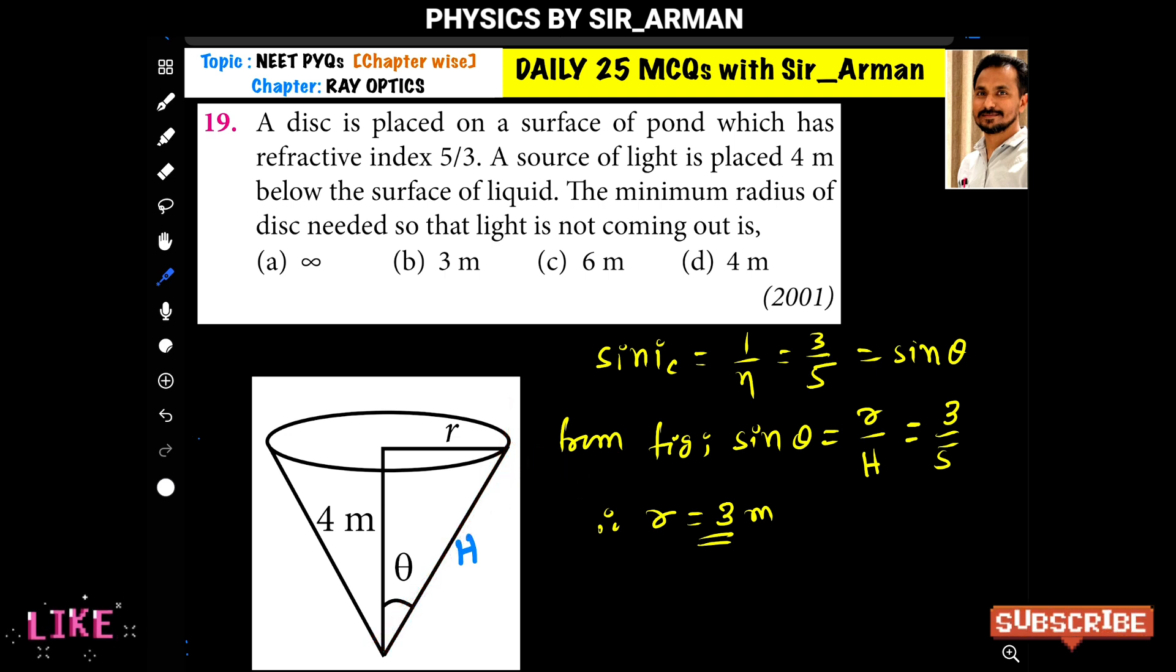Now, for critical angle or for the total internal reflection, we know one condition. That is, sine of critical angle is equals to 1 by eta. That is the refractive index. And refractive index n is 5 by 3. So, 1 by n is 3 by 5.